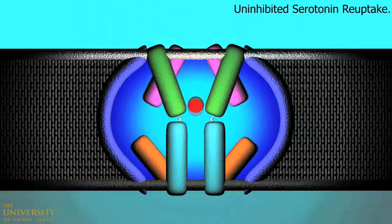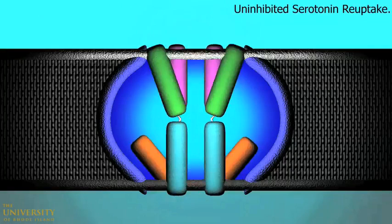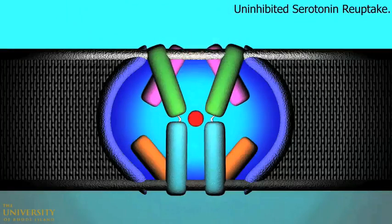During uninhibited serotonin reuptake, serotonin moves through the transport protein's gated rocker switches smoothly.